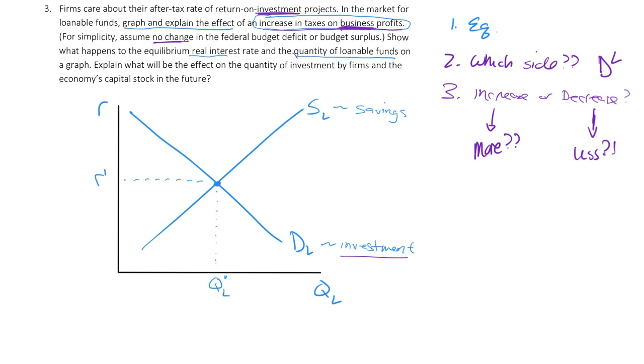If we are going to be taxed on business profits, every profit that I make, I'm not making as much. I got to give some back to the government. So that's going to be an incentive to do less investment. I have no incentive now if I know the money that I make is going to be taken away from me. So the demand is going to shift to the left because it's a decrease. And we see this shift to the left.